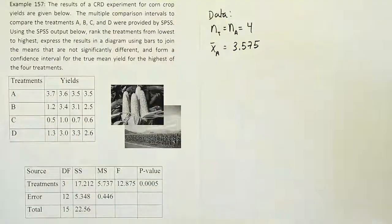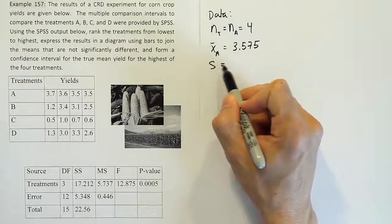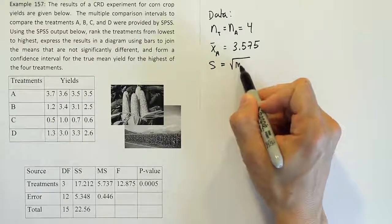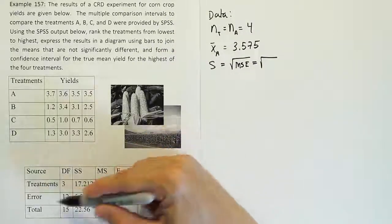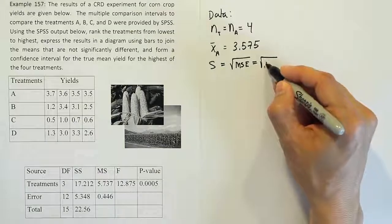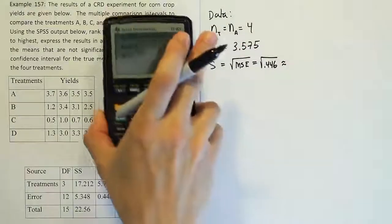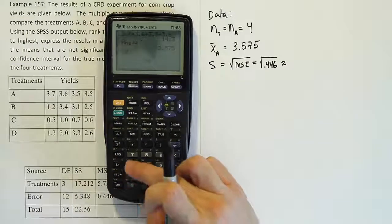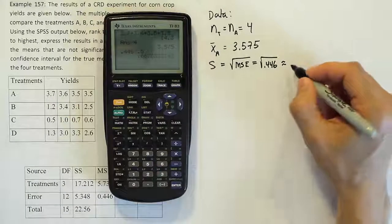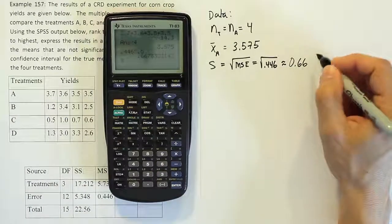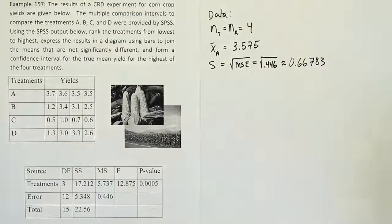Okay, so now that we have our mean, our next step is going to be to come up with our standard deviation. Now our standard deviation is just the square root of MSE. So in this case, it's going to be the square root of this number in our table, MSE. That's 0.446. And then after taking the square root, let's see what we get. So if I do 0.446 raised to the 0.5 power, I get the answer 0.66783. Let's use five decimal places to keep as much accuracy as possible.